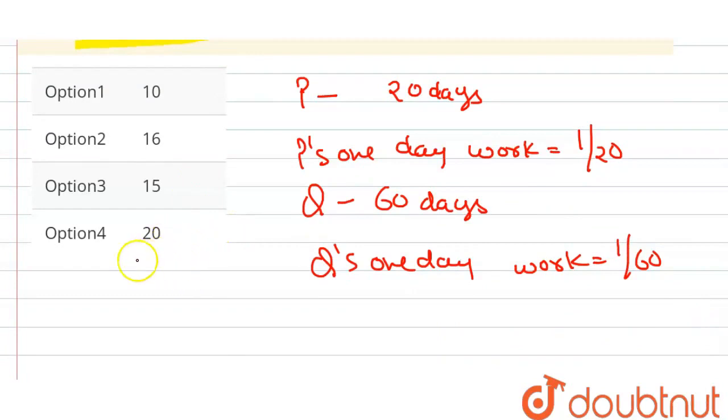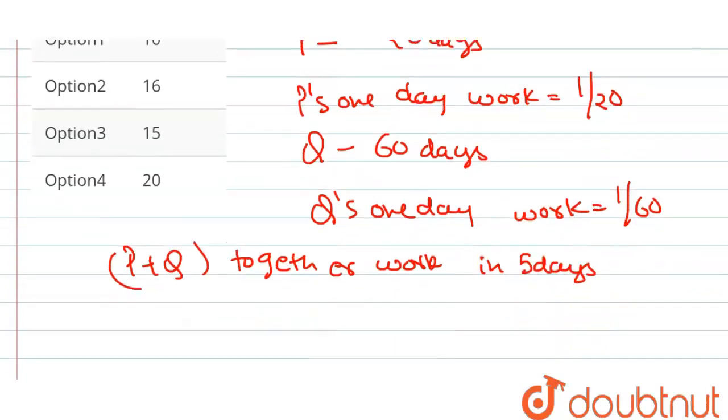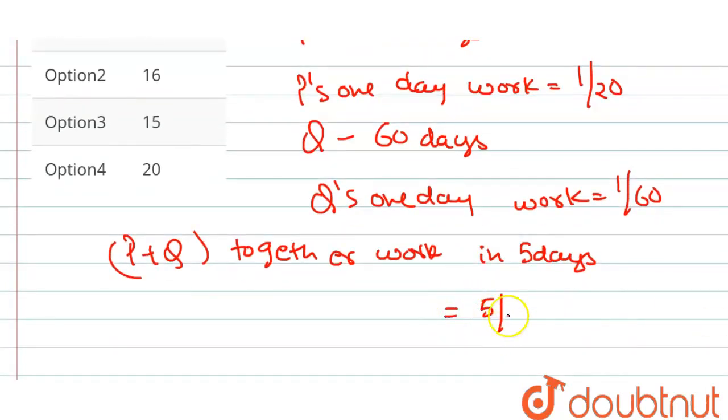Now, find out करेंगे कि P और Q, 5 दिन में कितना काम करते हैं? P plus Q, together, together work in 5 days. 5 दिन में कितना काम करते हैं? यह हमारा किसके बराबर हो जाएगा? यह value आएगी हमारी 5 by 20 plus 5 by 60 के equal.